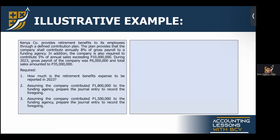Let's answer a problem to reinforce the concepts of defined contribution plans. Kenya Company provides retirement benefits to its employees through a defined contribution plan. The plan provides that the company shall contribute annually 8% of gross payroll to a funding agency. In addition, the company is also required to contribute 5% of annual sales exceeding 10 million. During 2023, gross payroll is 6 million while total sales is 35 million. Number one: How much is the retirement benefits expense to be reported in 2023?